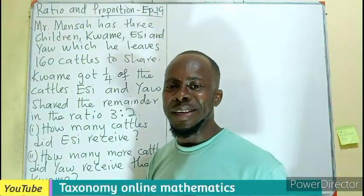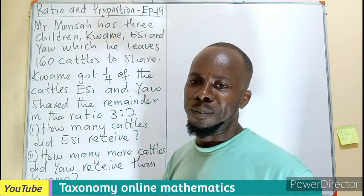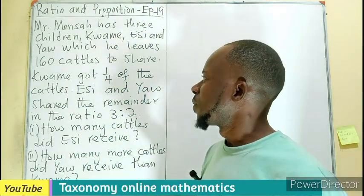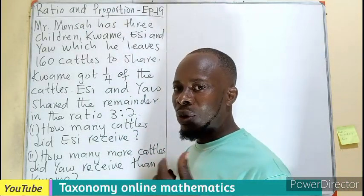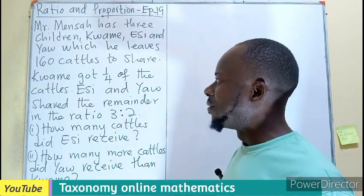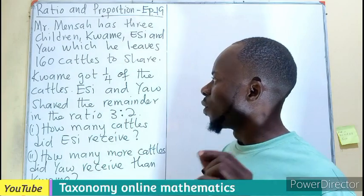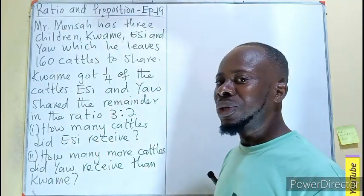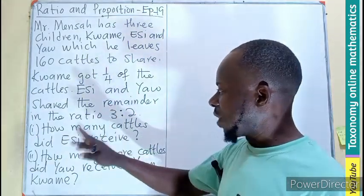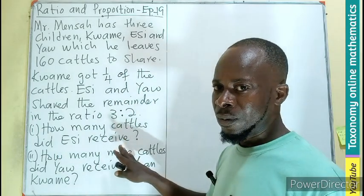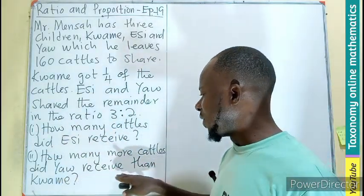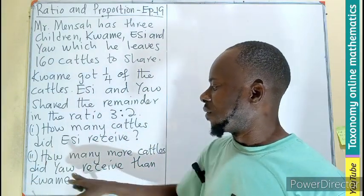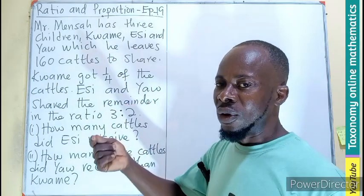Welcome to episode 19 of the tutorial on ratio and proportion. Today we are taking sharing of a quantity by a given ratio. Mr. Mensa has three children — Kwami, Ac, and Yam — to whom he leaves 160 cattle to share. Kwami got one-fourth of the cattle, then Ac and Yam share the remainder in the ratio 3:2. First question: how many cattle did Ac receive? Second: how many more cattle did Yam receive than Kwami?